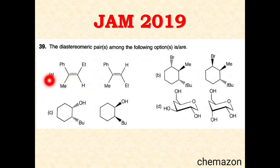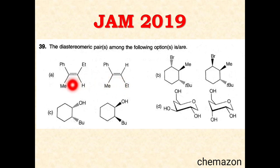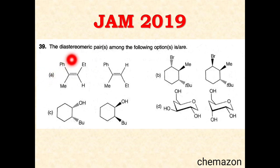In the first option you can see there are two alkene molecules with four different substituents. These are molecules in which we can assign E/Z nomenclature, and these are a type of diastereomers. So option A is one of the pairs which are diastereomers.